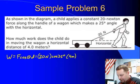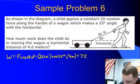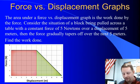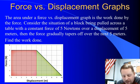20 newtons times 4 meters is going to be 80 times the cosine of 25 degrees. It's going to give us a total of about 72.5 joules. Alright, moving on.